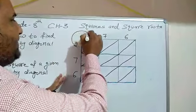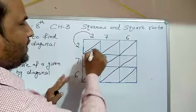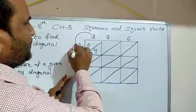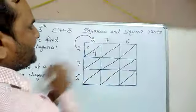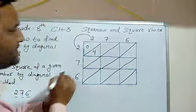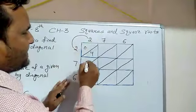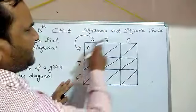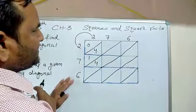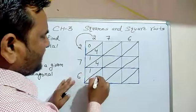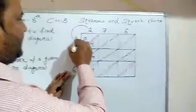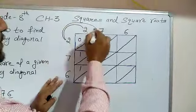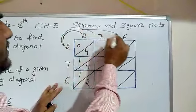First, 2 is multiplied by 2: 2 twos are 4, so we write it as 04. Then 2 is multiplied by 7: we get 14. Then 2 is multiplied by 6: 2 sixes are 12. So that completes 2 into 2, 2 into 7, and 2 into 6.